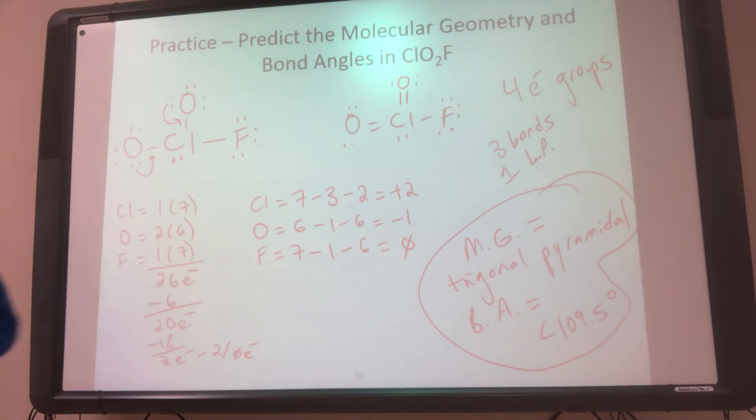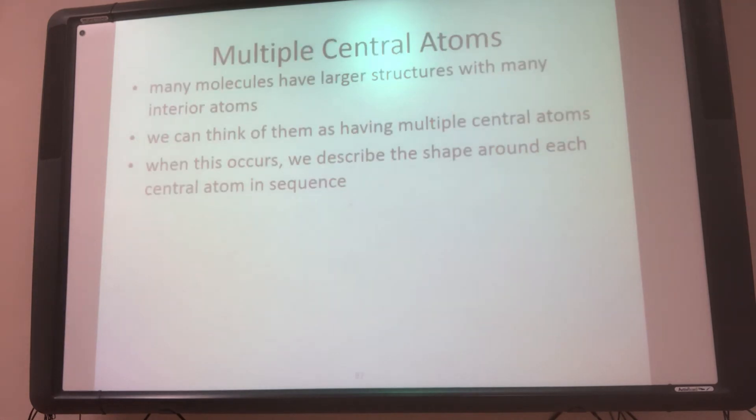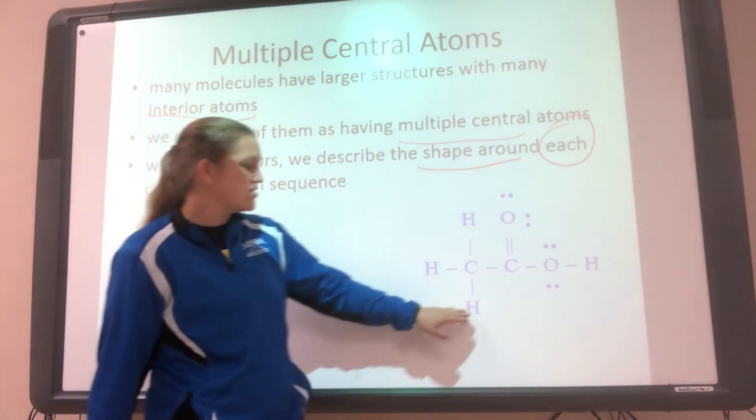Now, this is only one central atom. What if I had more than one central atom? So some molecules that have larger structures are going to have many interior atoms. So we can kind of think about them having multiple central atoms. So when we do this, we want to think about what is the shape around each of those central atoms.